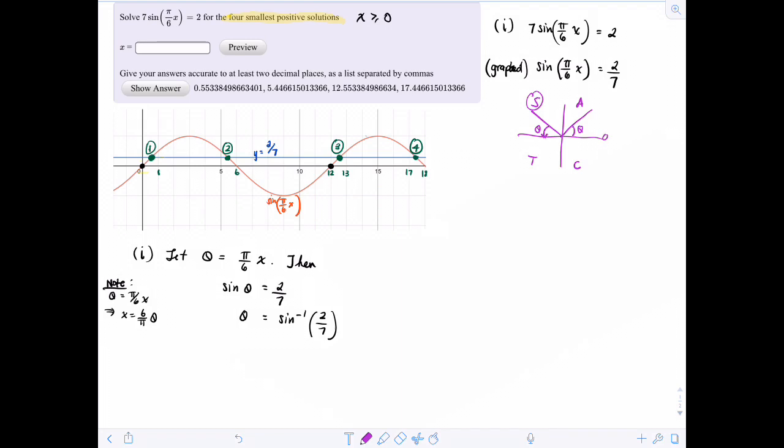So now I need to find the angle such that theta is the reference angle in the second quadrant. Well, if this is 0, pi over 2, and pi, I can easily find it by taking pi minus theta. So for the next solution, I would have theta minus pi, meaning that I would just take the inverse of sine of 2 sevenths minus pi.